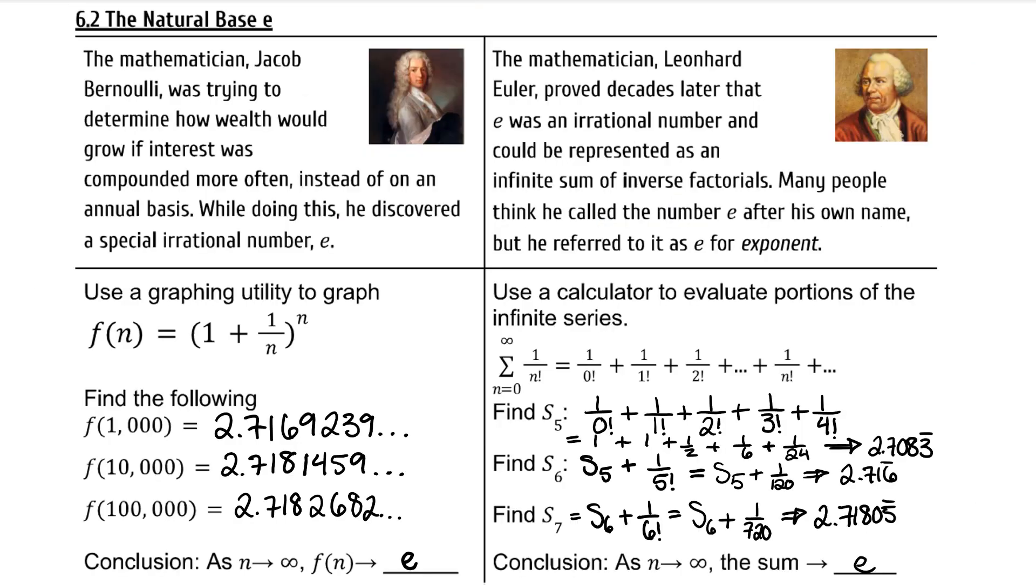e is called the natural number and just like pi, it is a very special, repeatedly used, irrational number that has its own specific letter to represent it.